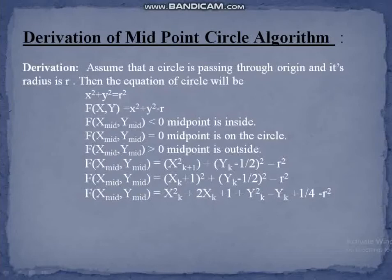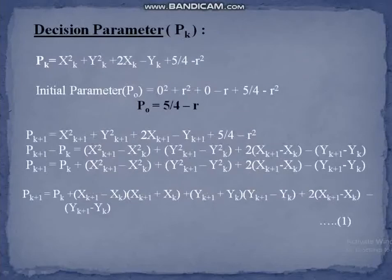The decision parameter plays an important role in finding the next point of the circle. For the initial parameter p₀, we derive it from pₖ by putting x = 0 and y = 0, giving p₀ = 5/4 − r. If we put k+1 instead of k into pₖ, we get equation 1 for the decision parameter.